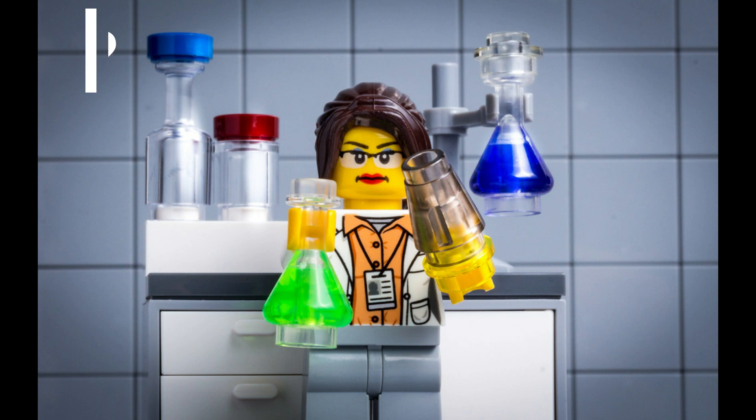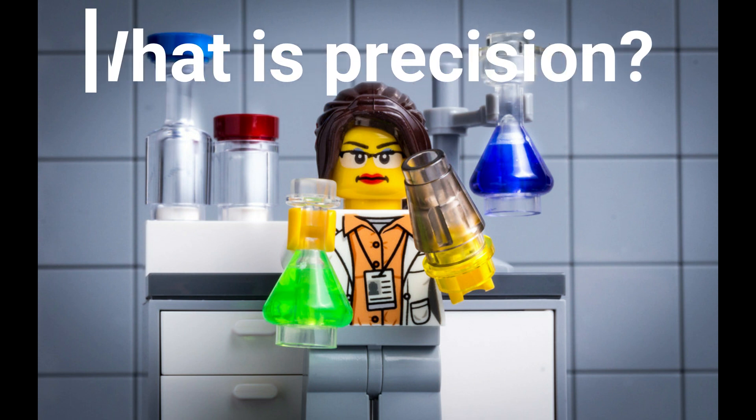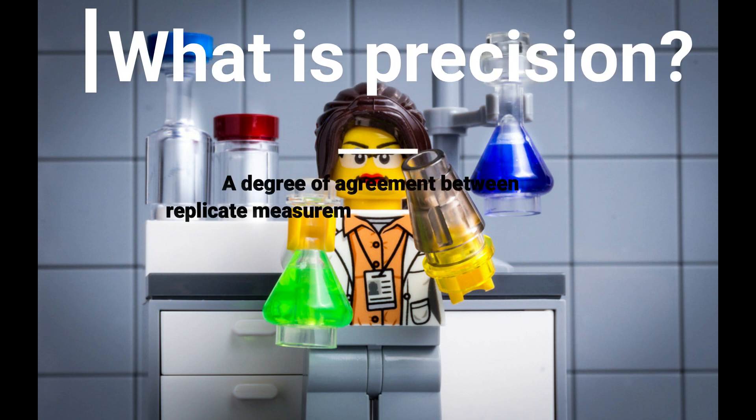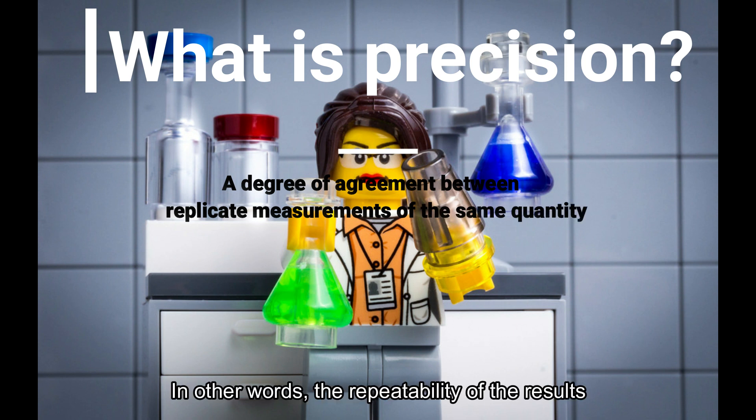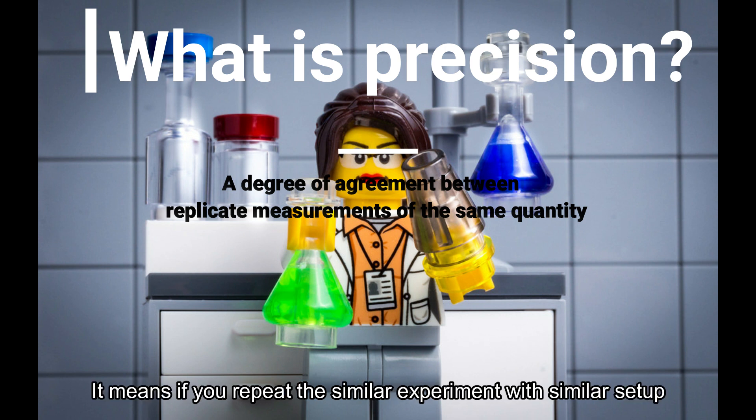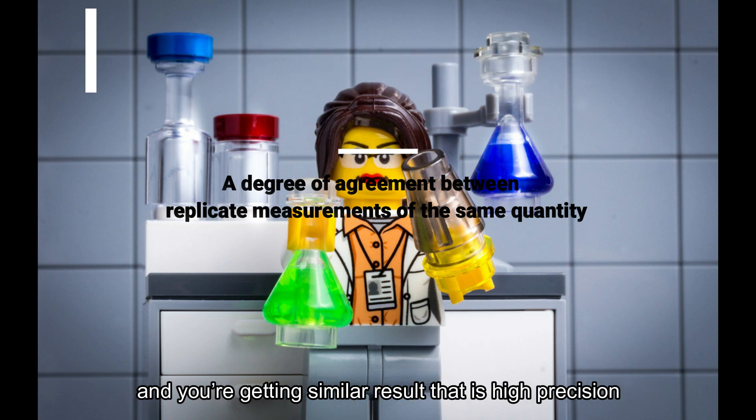What is precision? By definition, precision is the degree of agreement between replicate measurements of the same quantity. In other words, the repeatability of the results. If you repeat the similar experiment with similar setup and you're getting similar results, that is high precision.